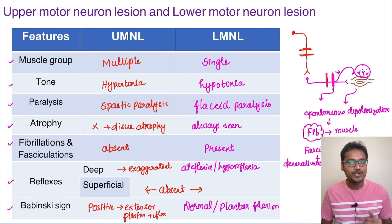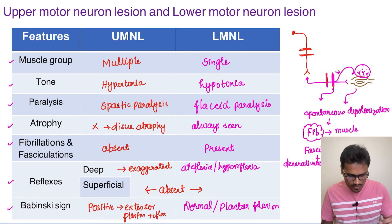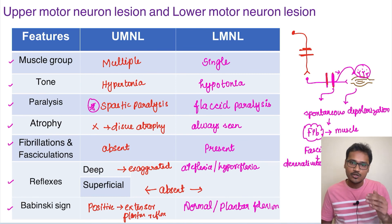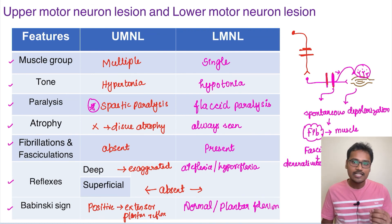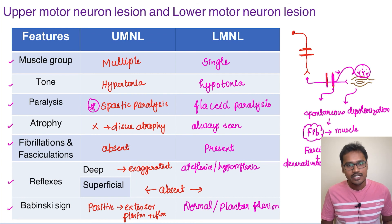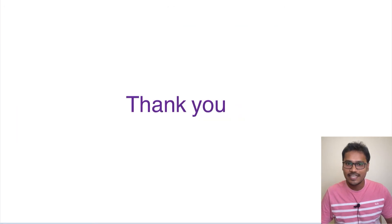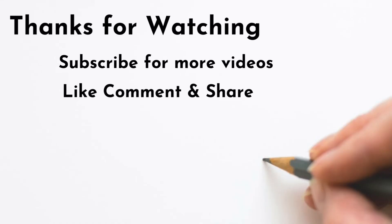In summary, in upper motor neuron lesion, tone and reflexes are exaggerated, the Babinski sign is positive, and it causes spastic paralysis. Whereas in lower motor neuron lesion, there is hypotonia, areflexia or hyporeflexia, and the Babinski sign is absent. These are the differentiating features between upper motor neuron and lower motor neuron lesions. Thank you for listening. If you like the content, subscribe to the channel and share it with your friends.